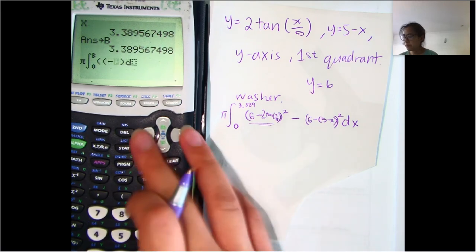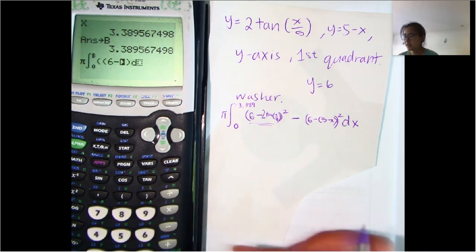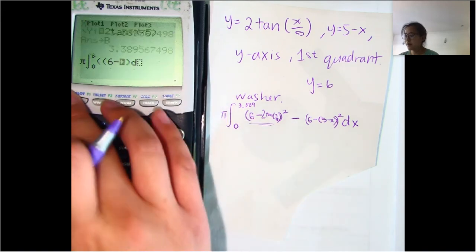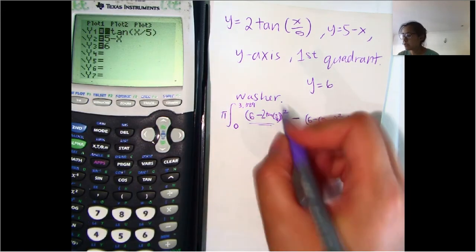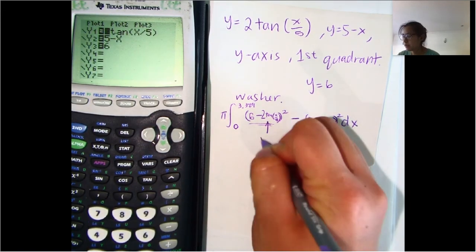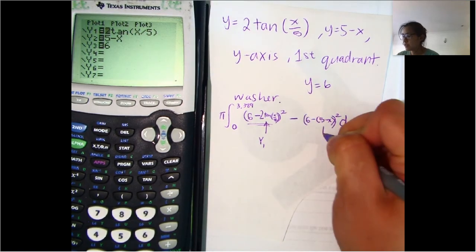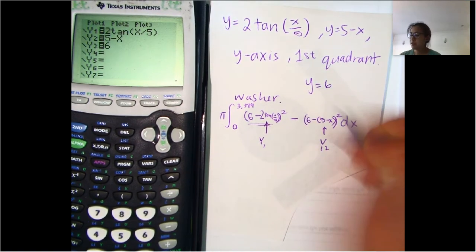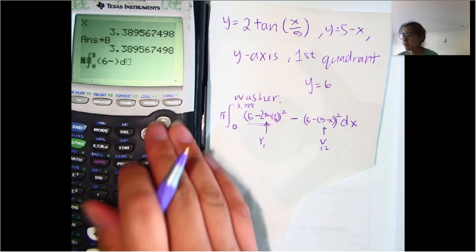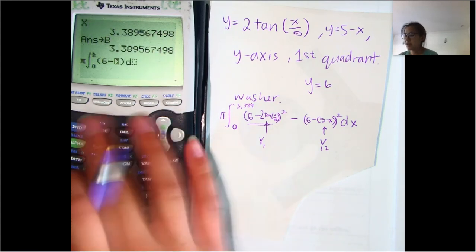6 minus, and then, well, let's go see where this function was typed in. So this was typed into y1, and then this function was typed into y2. So we'll go ahead and keep that in mind there. So we do 6 minus, and then y1,